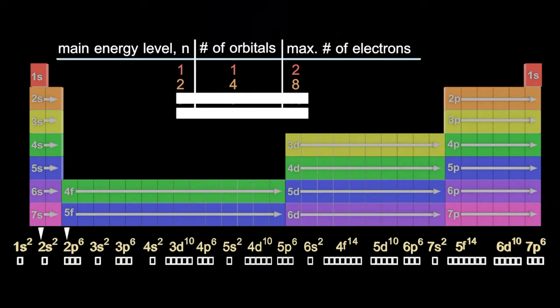The second main energy level, well I've got the 2s and the 2p and that looks like four boxes, four orbitals there. And so since each holds two electrons maximum, that's going to give me eight electrons. So there's a pattern for me.